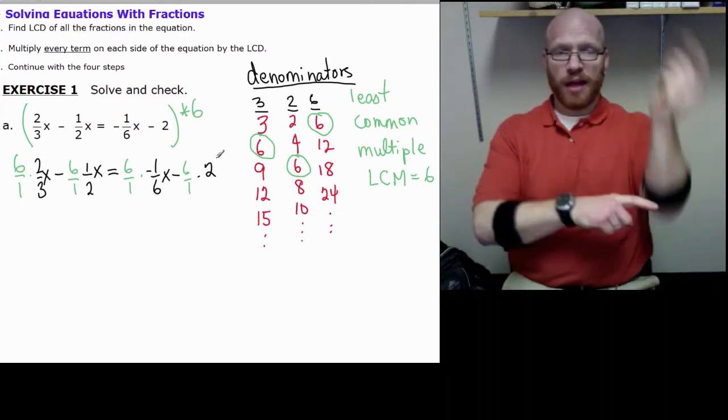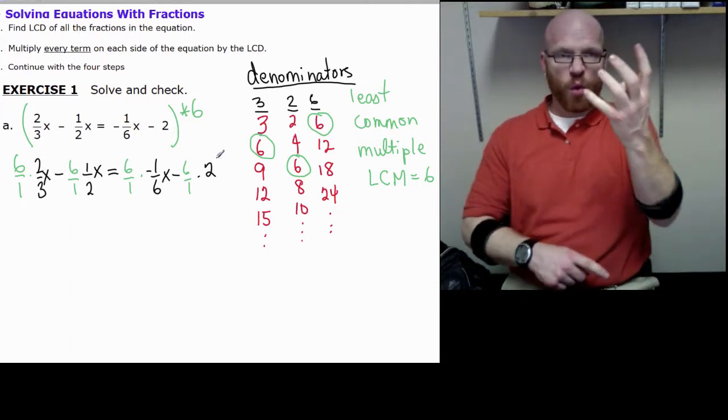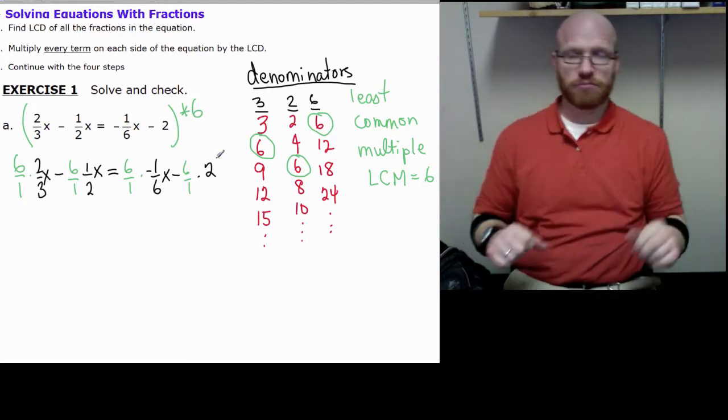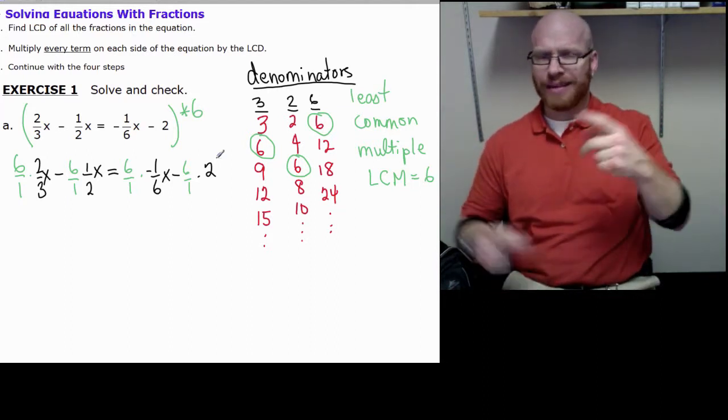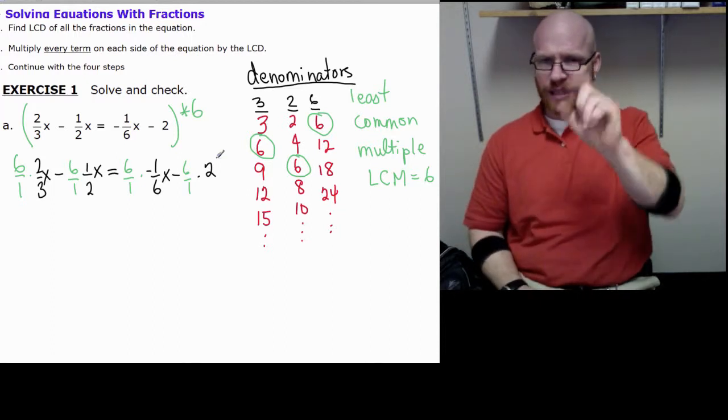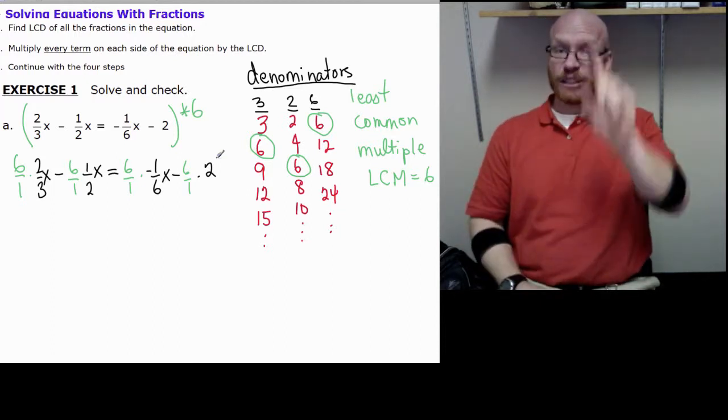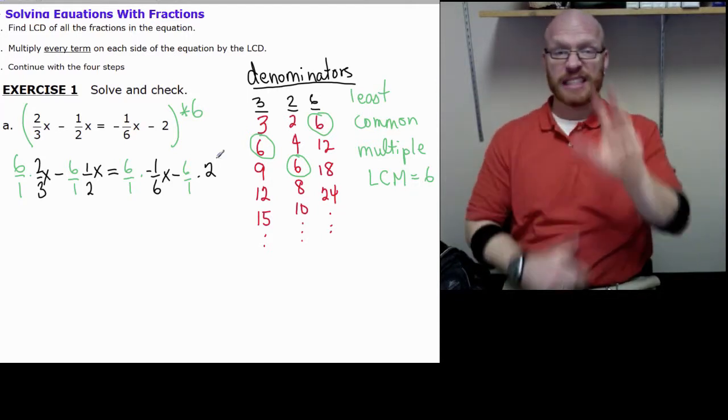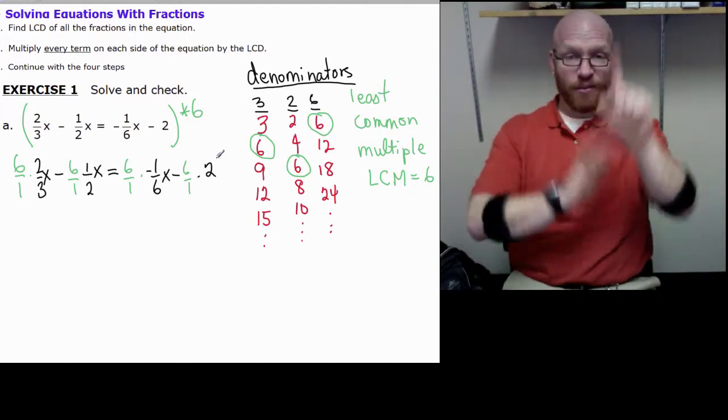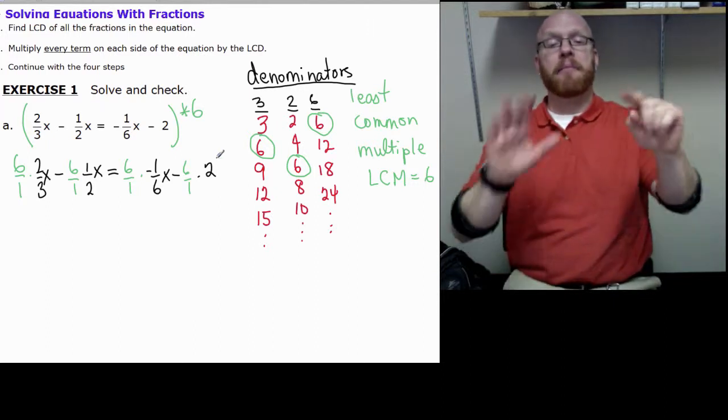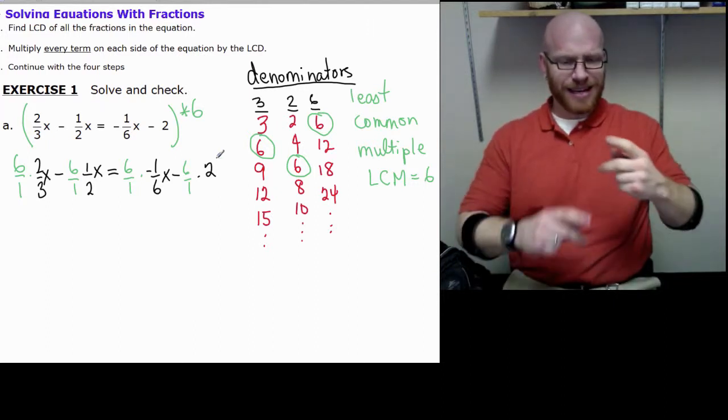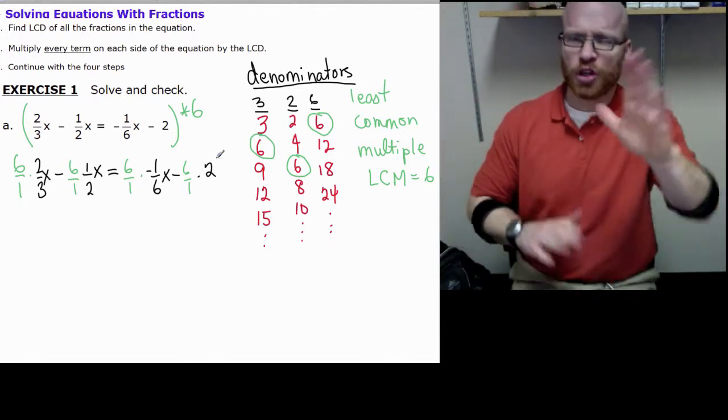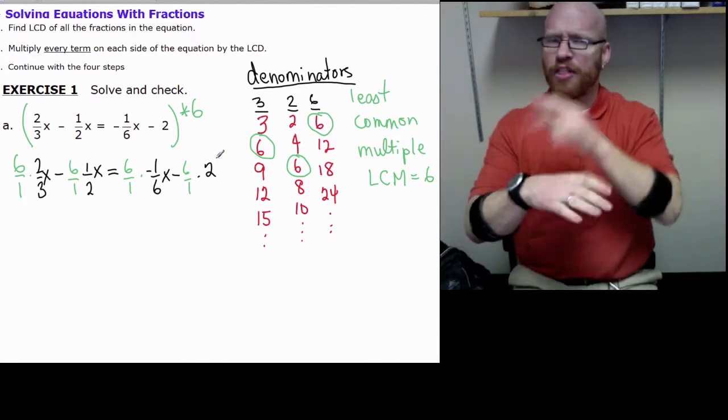Let me check my work. We had 6, we multiplied 4 different terms, 2 on the left, 2 on the right. So we have 6 over 1 times 2 thirds x minus 6 over 1 times half x equals 6 over 1 times negative 1 sixth x minus 6 over 1 times 2. It appears pretty good. Let's see what happens when we multiply the fractions.